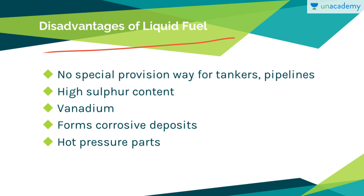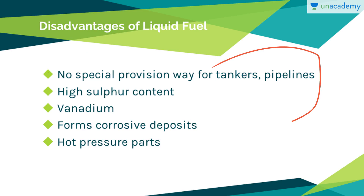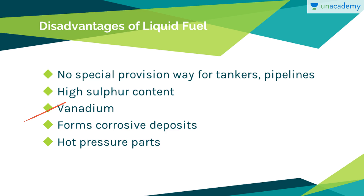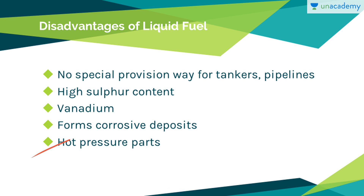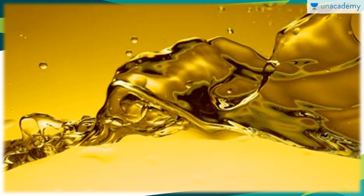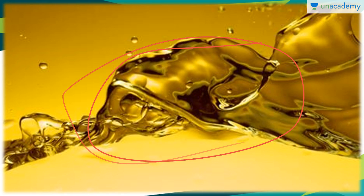What are the disadvantages of liquid fuel? Special provisions such as tankers or pipelines are required for handling combustion gases. There is a high sulfur content in liquid fuel, which may lead to corrosion. There is also the presence of vanadium, a highly reactive element, which can lead to harmful emissions. These form corrosive deposits in tankers and pipelines, and the high-pressure hot parts are easily worn out. Here you can see petroleum, shown as a representative image of liquid fuel.